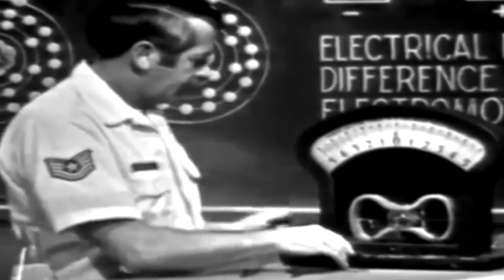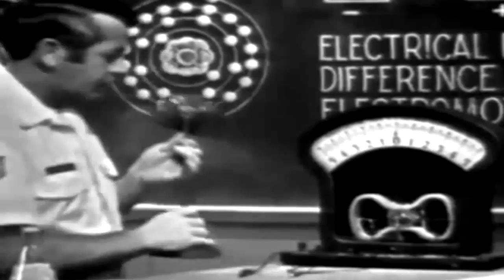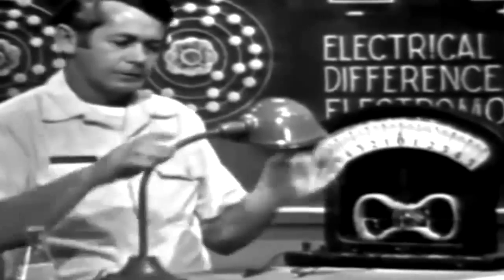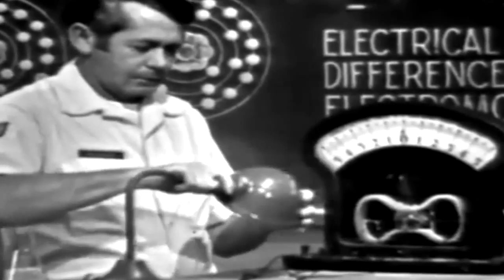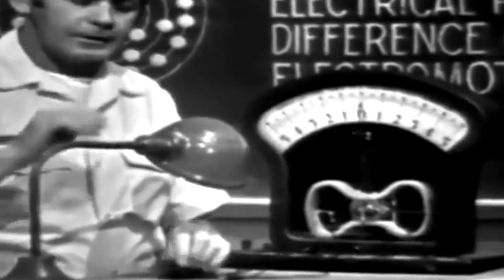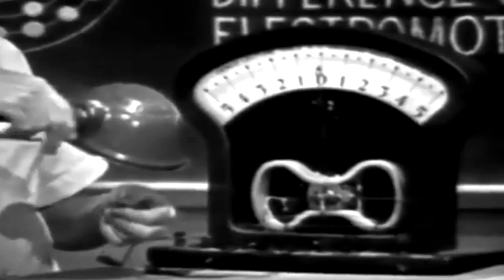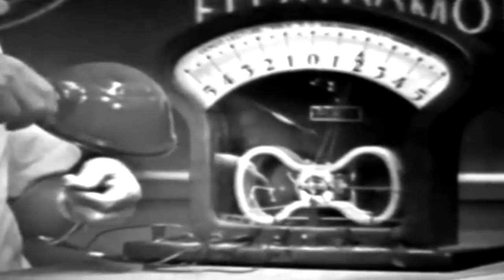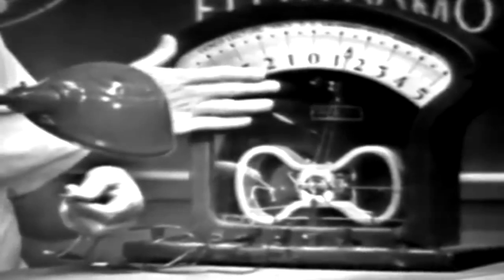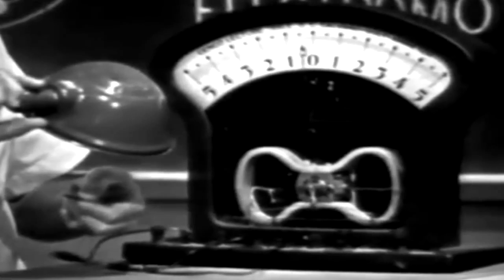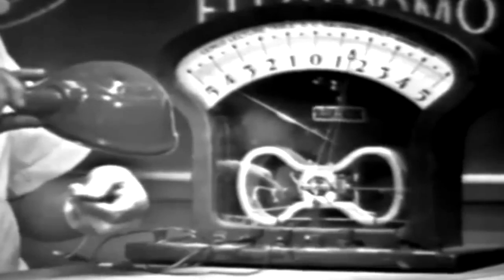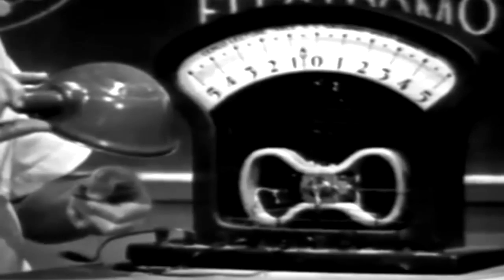Connecting it across the meter, I'll use this lamp as the light source. Now, watch what happens as soon as I turn the switch on. The meter indicates a voltage. Then this little device produces a voltage simply by using light.